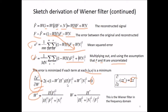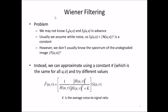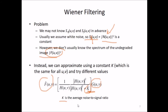From this derivation, W* (conjugate) equals |H|²·|F|² / (|H|²·|F|² + |N|²), and W is given by H* / (|H|² + |N|²/|F|²). This is the Wiener filter in the frequency domain. The problem is we may not know Sη and Sf in advance. Usually we assume the white noise Sη is constant. Since we don't know the spectrum of the undegraded image, we approximate using a constant k, so F̂(u,v) = [1/H(u,v)] · [|H(u,v)|² / (|H(u,v)|² + k)], where k is the average noise-to-signal ratio.